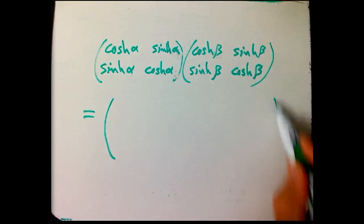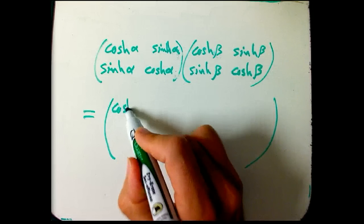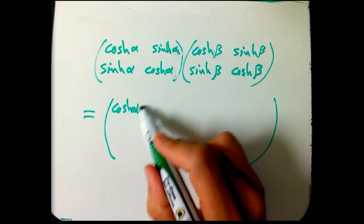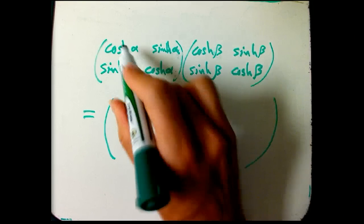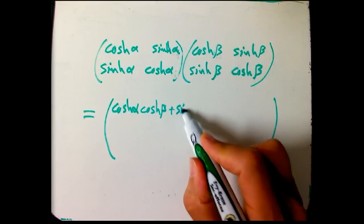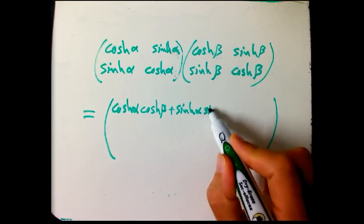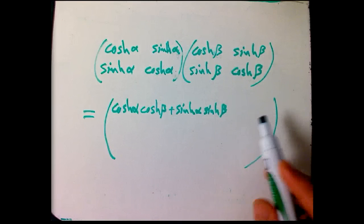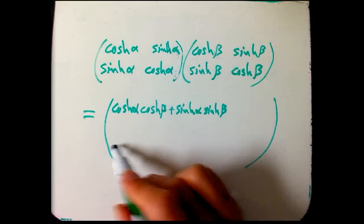Well, let's multiply these together. We're going to get something that's rather similar to that calculation. Cosh alpha, cosh beta, those two, and then sinh sinh. But with a plus sign. Sinh alpha, sinh beta.